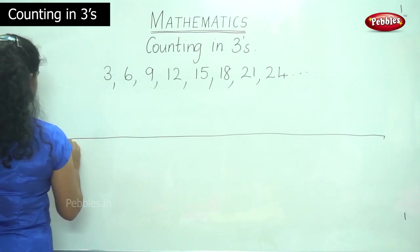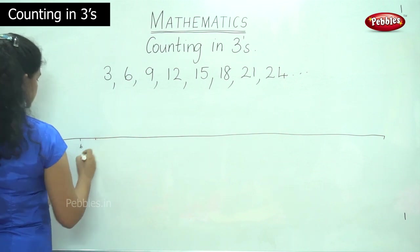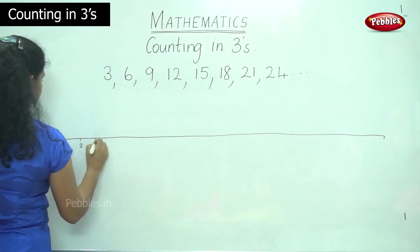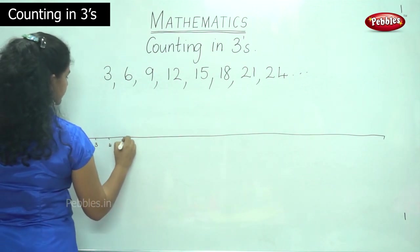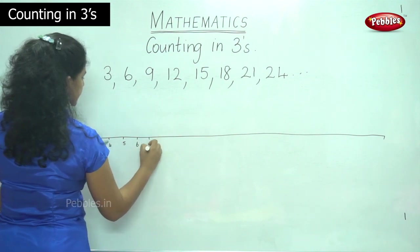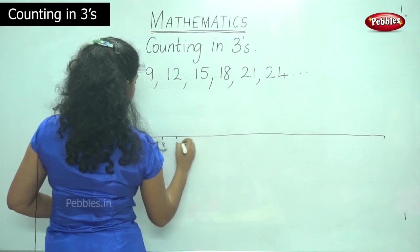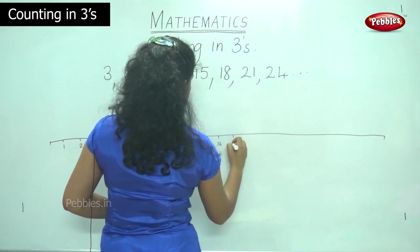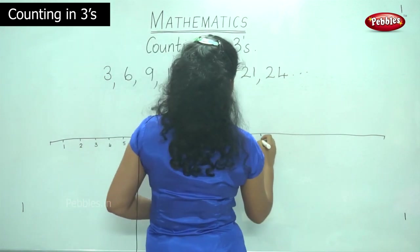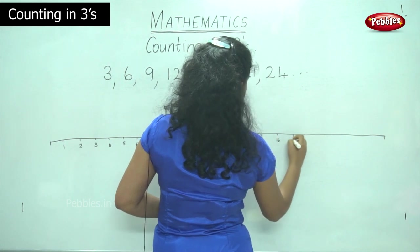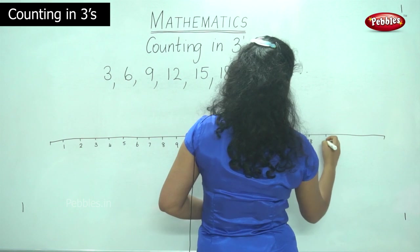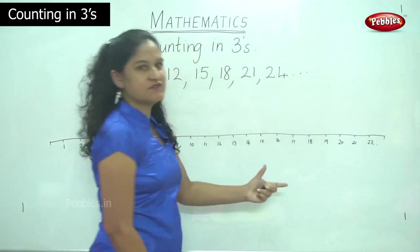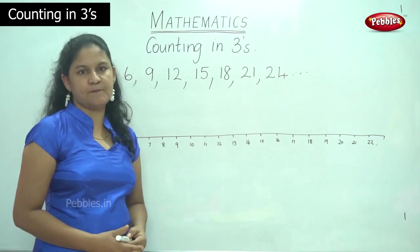So we will be writing the numbers on the number line. So 1, 2, 3, 4, 5, 6, 7, 8, 9, 10, 11, 12, 13, 14, 15, 16, 17, 18, 19, 20, 21, 22. So we have the number line.